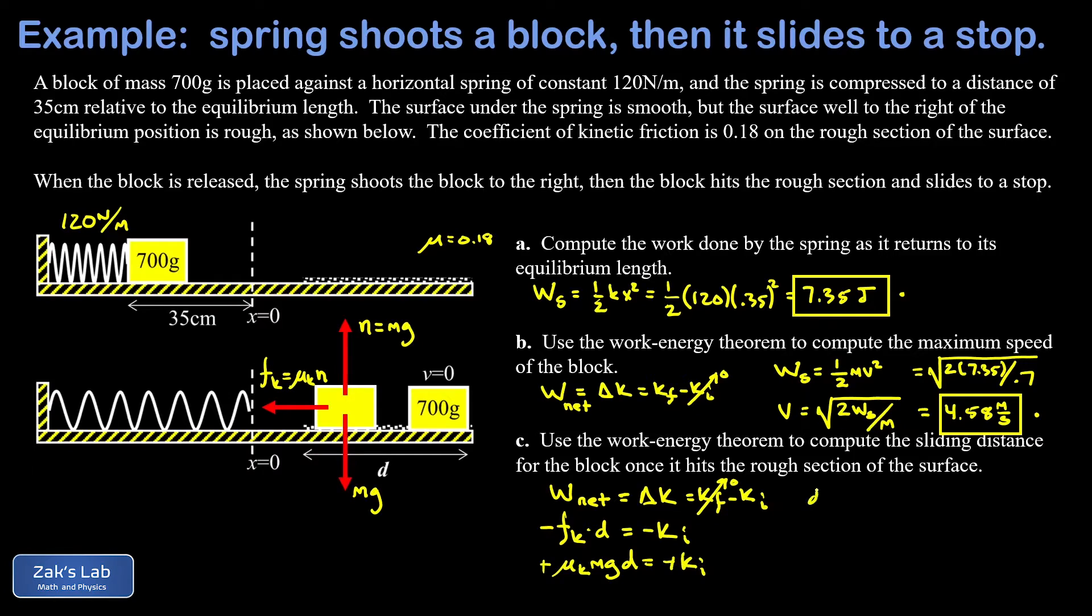And I'm able to solve for the sliding distance d, and I can write that as the initial kinetic energy divided by mu k mg. Now we're ready to plug in the numbers, and I get 7.35 joules divided by this kinetic friction coefficient of 0.18, the mass of the object 0.7 kilograms, and g approximately 9.8 meters per second squared. And when we run the numbers on this, to three significant digits, we get 5.95 meters for the sliding distance, and we're done.